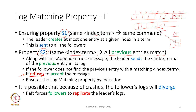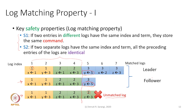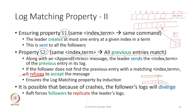Because of crashes, follower logs may diverge from the leader's log. The divergence has to be fixed. Raft forces followers to replicate the leader's logs — the leader is assumed to be always correct and followers simply replicate the leader's log, which eliminates divergence.